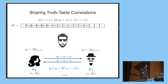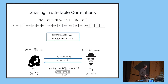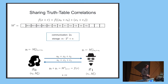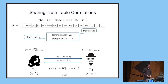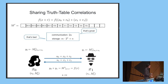By simply doing a lookup in their share of the truth table, the parties will recover additive shares of f(x). This means that to securely evaluate the function f, the parties only need to exchange their masked input, so the protocol has optimal communication of 2n. However, the storage requirement to securely evaluate this function is proportional to the size of the truth table, which is exponential in the input size — and that's quite bad.